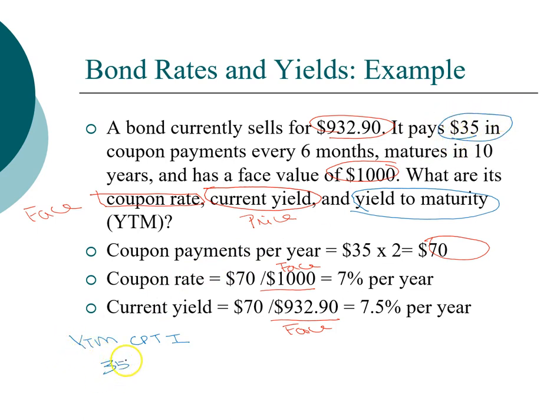So $35 is the annuity coupon payment. The face value at maturity is $1,000. This bond has 10 years left to maturity, but it's a semi-annual bond. So we have 10 times 2 per year, so N is 20.